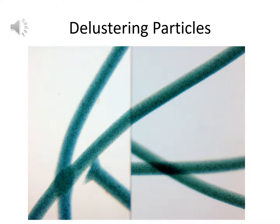As a follow-up on delustering particles: titanium dioxide granules are generally white, but because they block light under the light microscope, they appear as dark spots on the fiber. Fibers with high amounts of these particles may indicate nylon. The presence or absence of delustering particles is helpful information in fiber analysis.